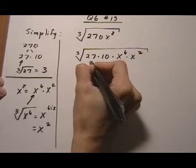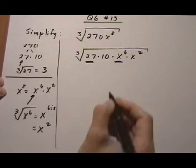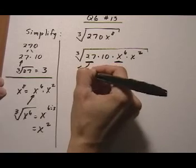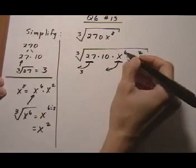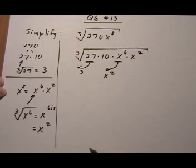And then I identify the perfect cube roots, 27 and x to the sixth. They're going to come out of the cube root. I'm going to cube root them. The cube root of 27 is going to be a 3 taken outside. Cube root of x to the sixth will be x to the sixth divided by 3 is x squared taken outside.